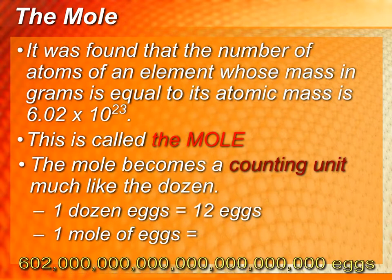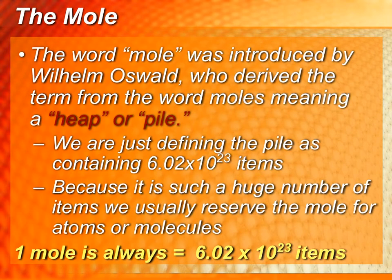The mole is a counting unit, just like a dozen. If I was to send you to the store for a dozen eggs, you would bring me home 12. If I send you to the store for a mole of eggs, you're going to bring me home a lot of eggs—6.02 times 10 to the 23rd eggs. So the same thing, if I have a mole of carbon atoms, I'm going to have 6.02 times 10 to the 23rd carbon atoms.